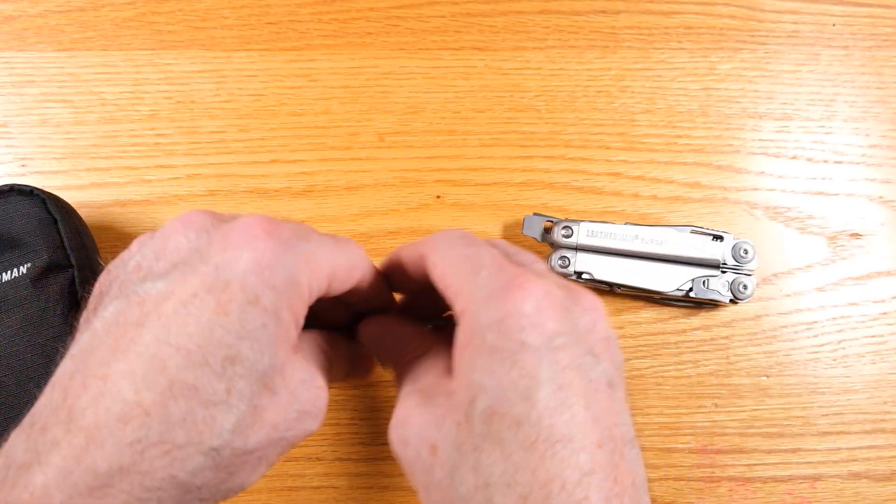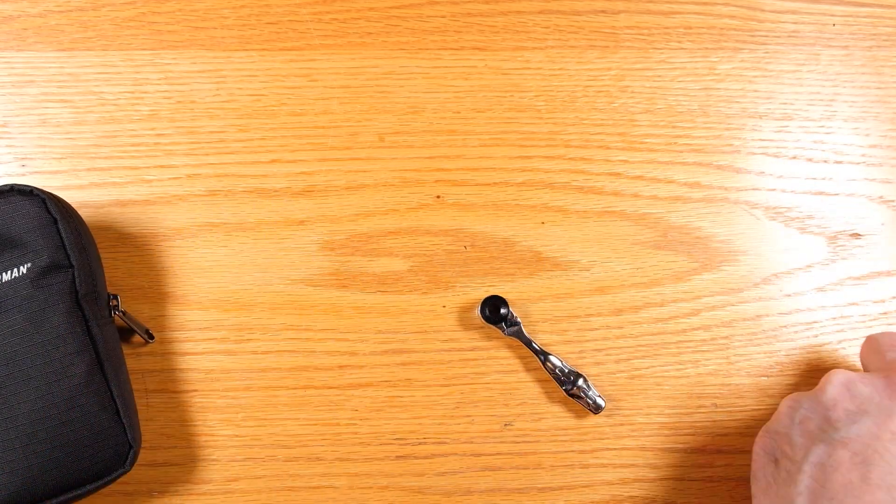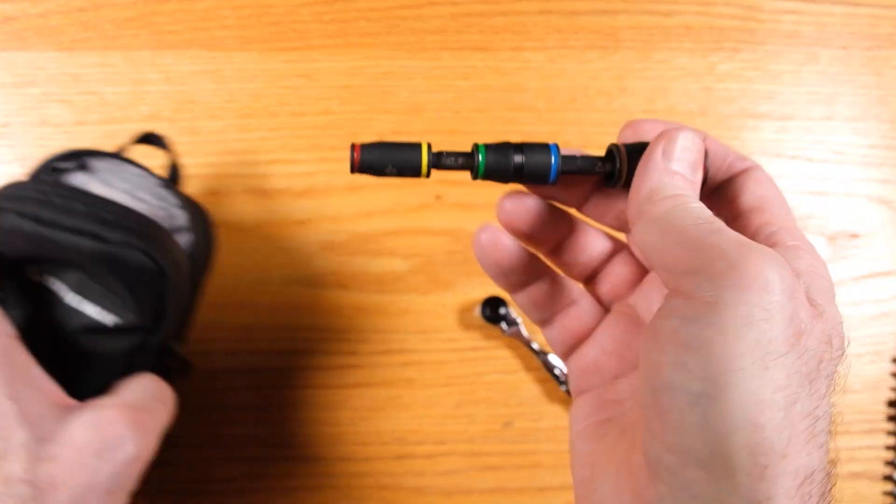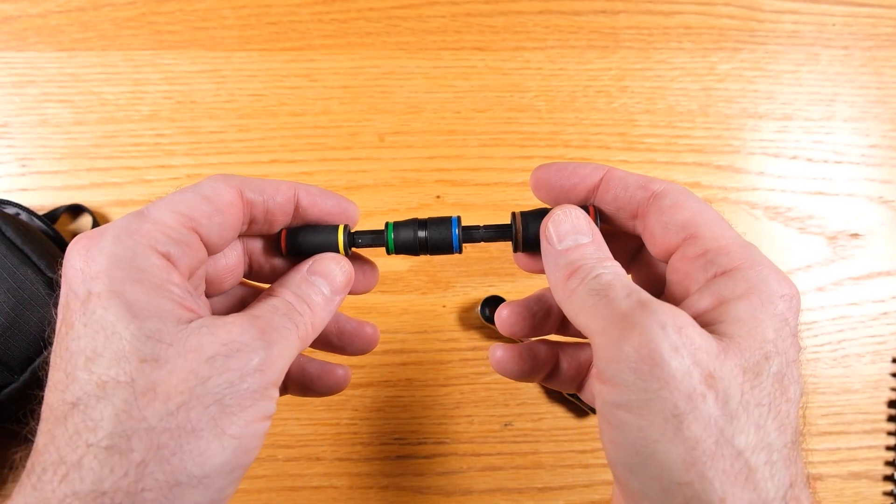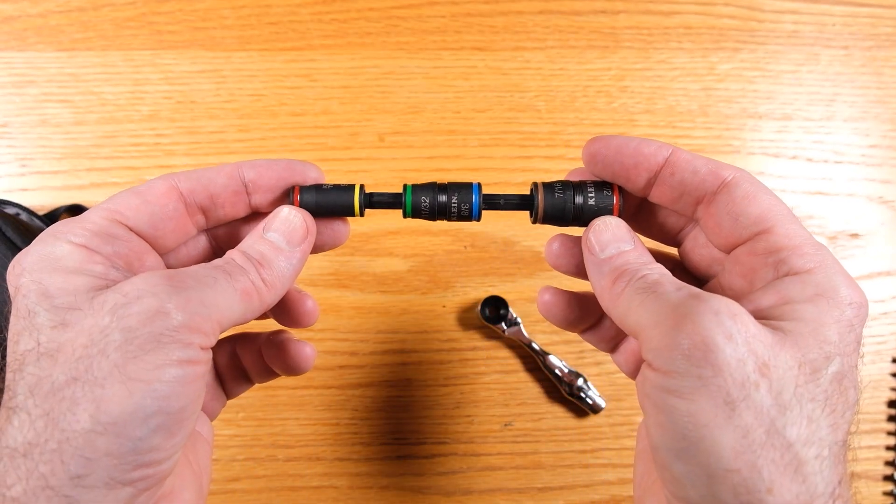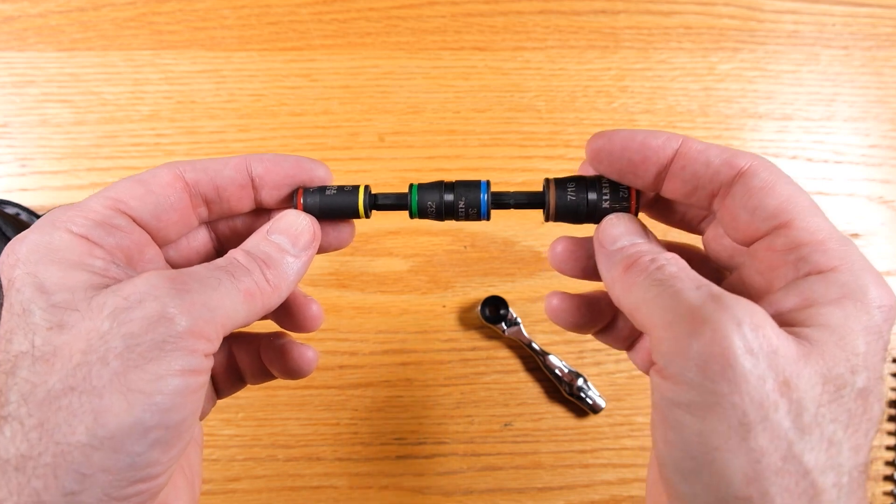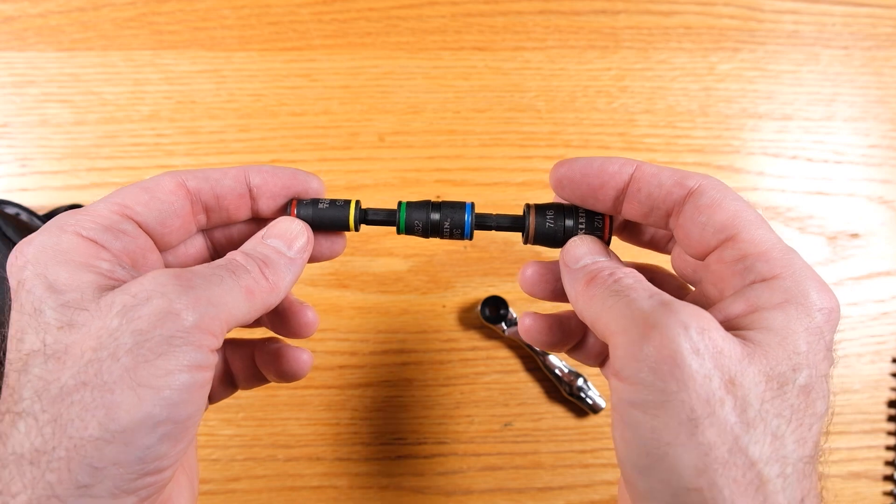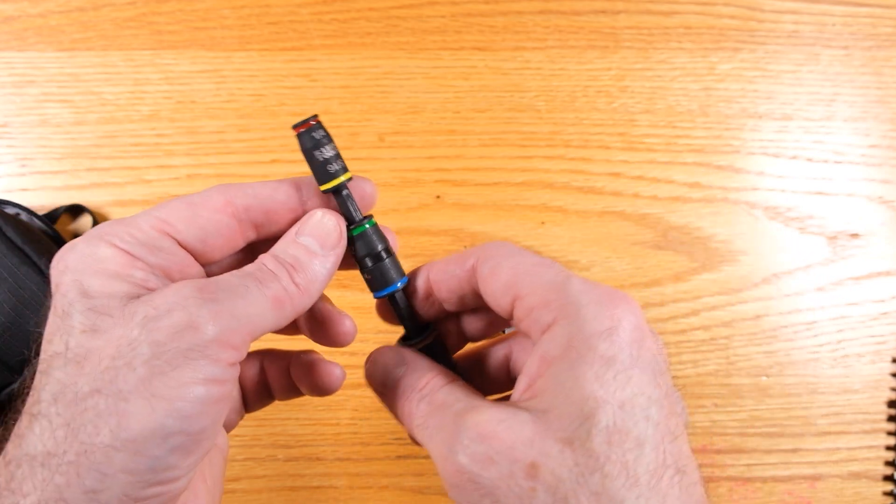The other thing that I have in this bag is right here. And this is something that Klein Tools makes. These are three double ended sockets. So you have six different socket sizes on this extension here. These are impact rated. So you can put these in your impact tool.